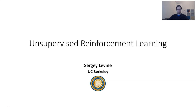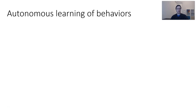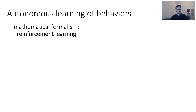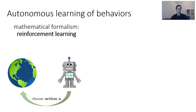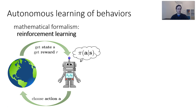My name is Sergey Levin and today I'm going to talk about algorithms for unsupervised reinforcement learning. To begin with, let's discuss how we can formalize the problem of learning behaviors. We need a mathematical formalism for decision-making, which we can get from reinforcement learning. In reinforcement learning, we model an environment and an agent, and the agent interacts with the environment making decisions, which we call actions, and the environment responds by selecting states and by providing rewards. The agent's goal is to find a policy, denoted as pi of a given s, that maximizes the expected total sum of rewards — not just now, but for all time.